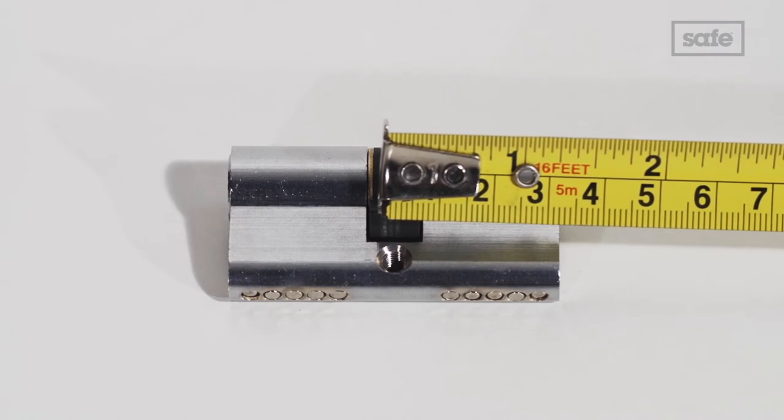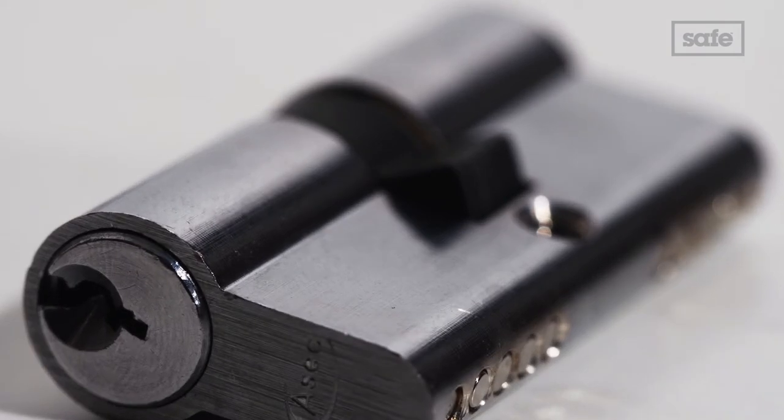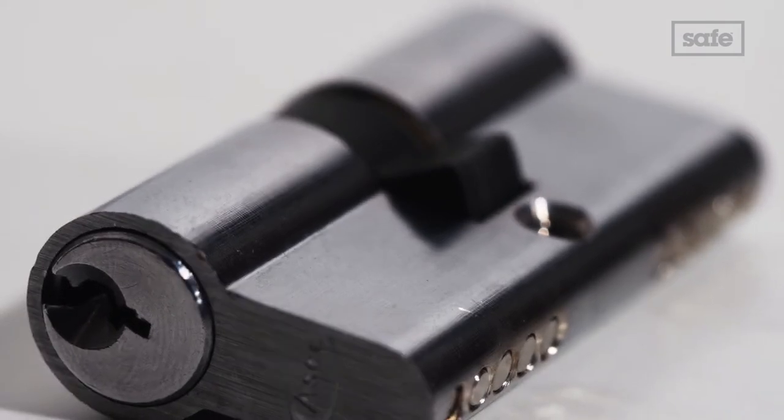The next measurement is the internal size to centre, known as dimension B. This is from the screw hole out to the right hand edge.